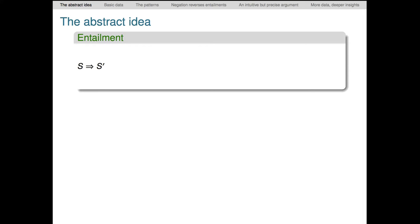We say that sentence s entails sentence s prime just in case all the possible ways the world could conceivably be that make s true are also situations that make s prime true. And I really mean all situations, whether actual or hypothetical. Abstractly, imagine that this is the set of worlds where s is true. Then sentence s entails sentence s prime if we have a situation like this, where these s worlds are fully contained in the s prime worlds.